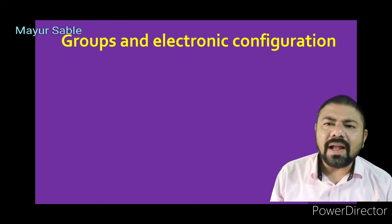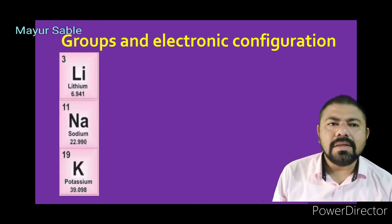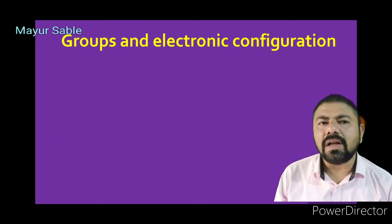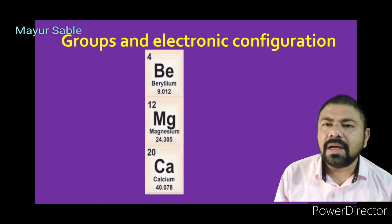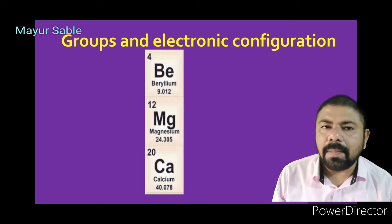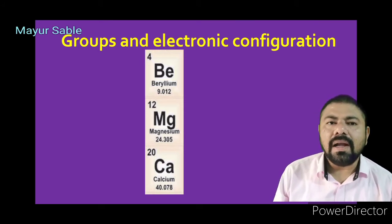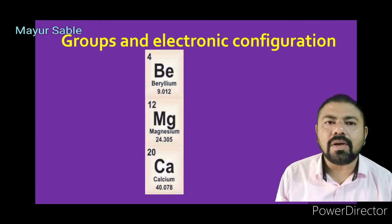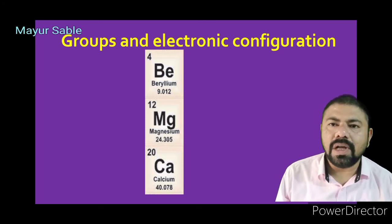In groups and electronic configuration, you will find that the number of valence electrons is the same for all elements in a group. For example, elements in Group 1 — the alkali metals family — all have the same number of valence electrons. Similarly, beryllium, magnesium, and calcium belong to Group 2 (the alkaline earth metals family), and the electronic configuration of beryllium is 2,2 — two electrons in the outermost shell.